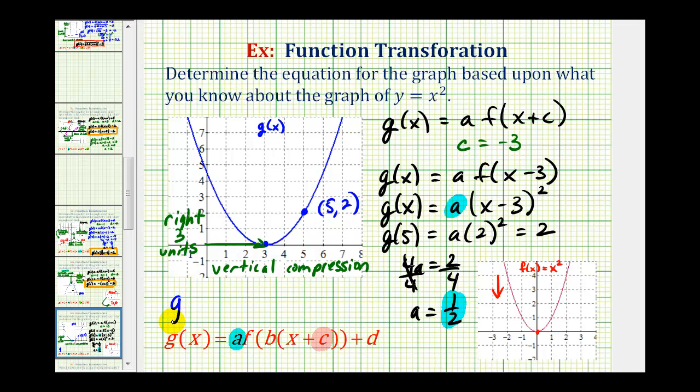G of x is equal to one-half times the quantity, x minus three squared. Okay, I hope you found this helpful.